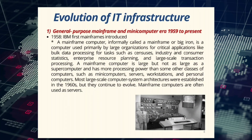Evolution of the IT infrastructure. First: general purpose mainframe and minicomputer era, 1959 to present. In 1958, IBM's first mainframe was introduced. A mainframe computer, informally called a mainframe or big iron, is a computer used primarily by large organizations for critical applications like bulk data processing for tasks such as census, industry and consumer statistics, enterprise resource planning, and large-scale transactions processing.